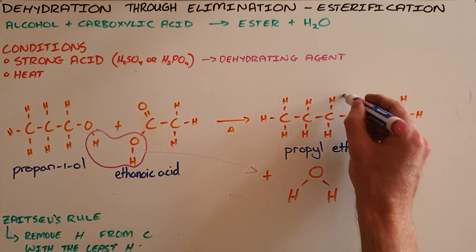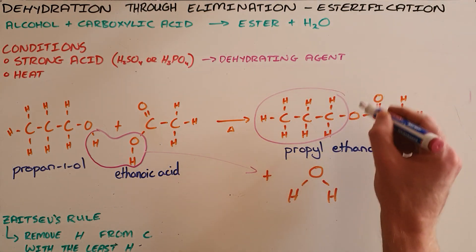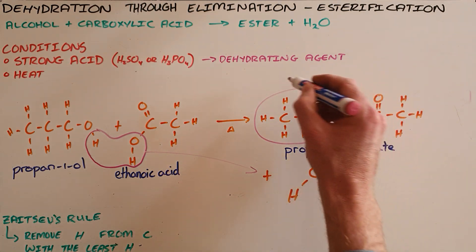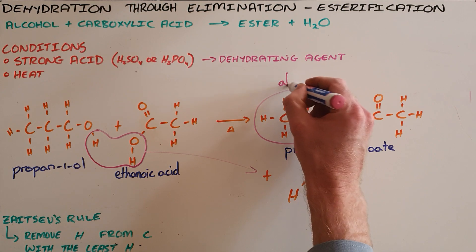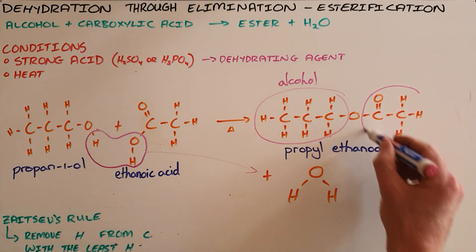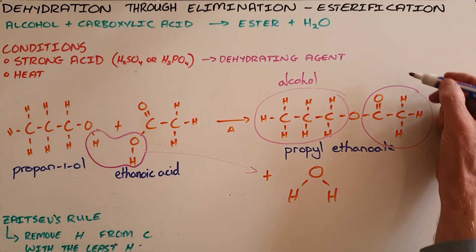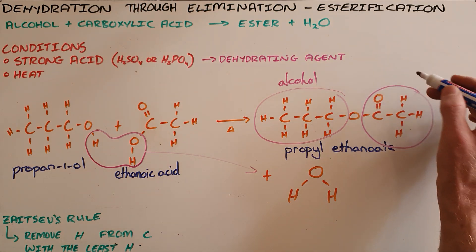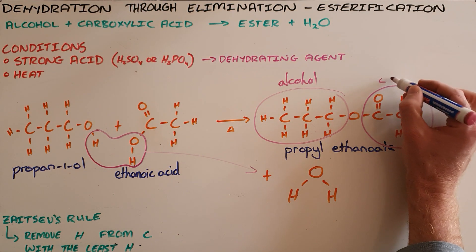The propyl, the part that is attached to the single bond oxygen, is always the part that comes from the alcohol, and the part that is attached to the single and the double bond oxygen is always a result of the carboxylic acid.